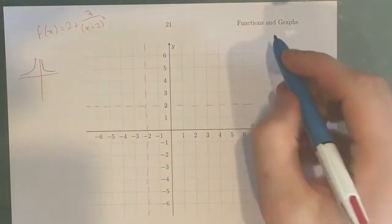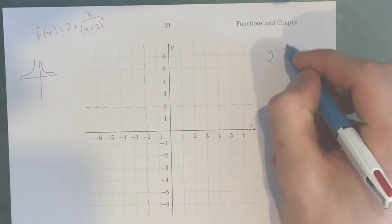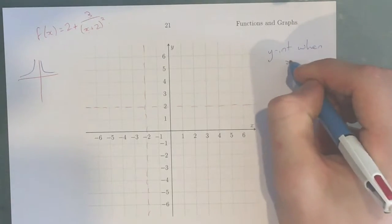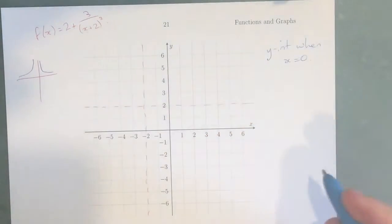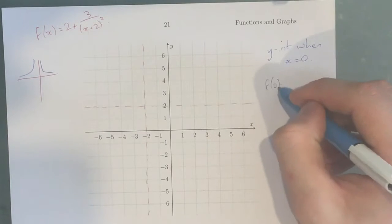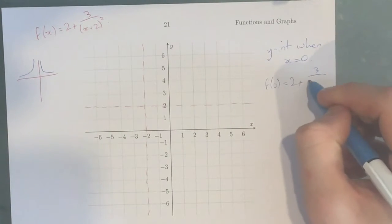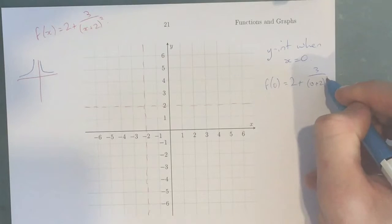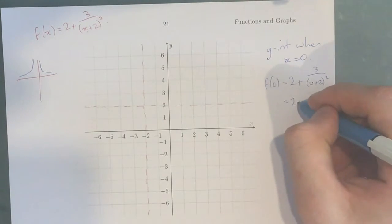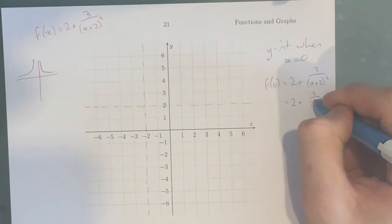How do we work out a y-intercept? Y-int when x equals 0. Whenever you want to work out a y-intercept, you just let x equal 0. So f(0) equals 2 plus 3 over (0 plus 2) squared. What happens is we get 2 plus 3 over 2 squared, which equals 2 plus 3 over 4.